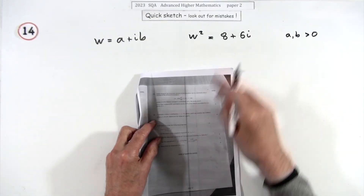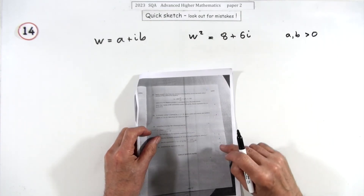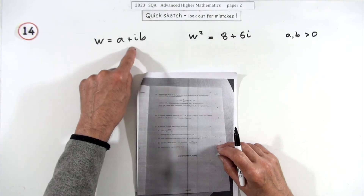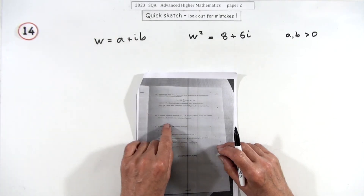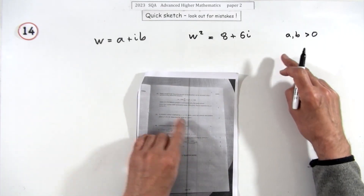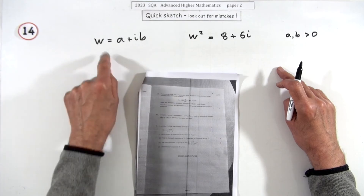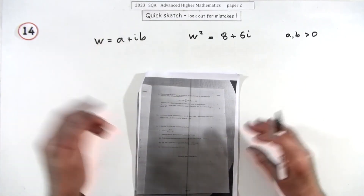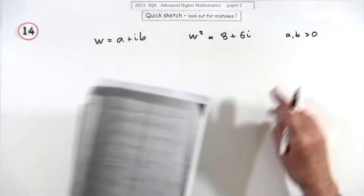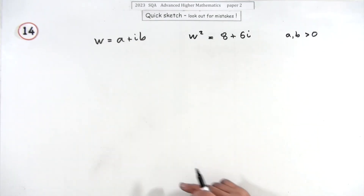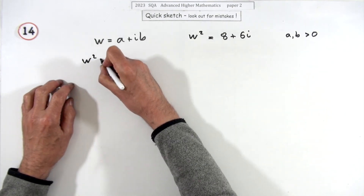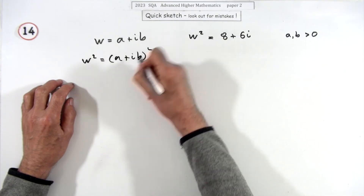Number 14 from paper 2 of the 2023 paper, four marks. A complex number w = a + ib is given, and its square is 8 + 6i. You need to find the values of a and b, where a and b are positive real numbers. First, expand w squared: (a + ib)² gives a squared, plus 2ab·i, plus i²b² which is minus b².